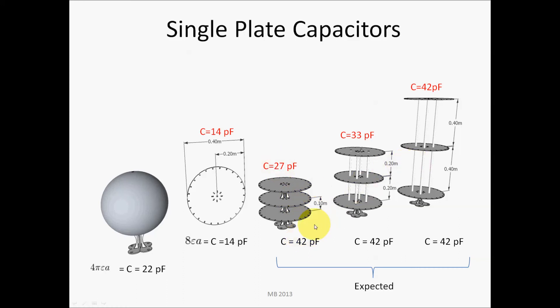At different spacing intervals, a single aluminum plate had a 14 picofarad capacitance. I expected when I stacked three of them you'd get a 42 picofarad capacitance, but what I wound up with was 27 picofarads. I increased the spacing to 0.2 meters and I got 33 picofarads.